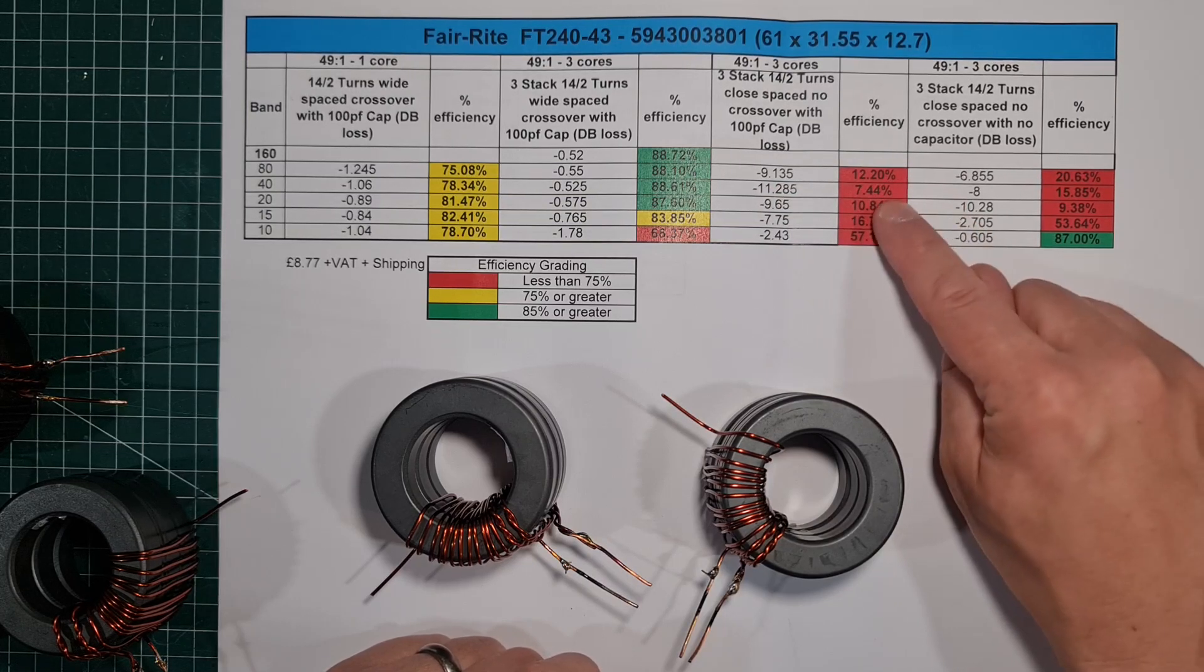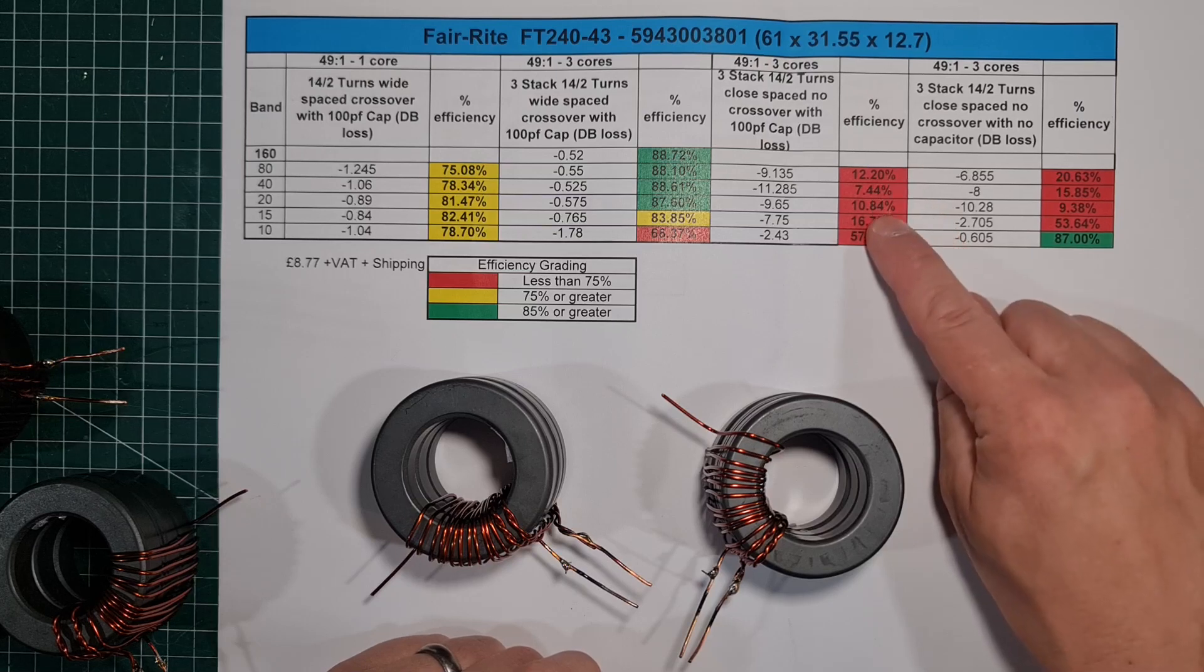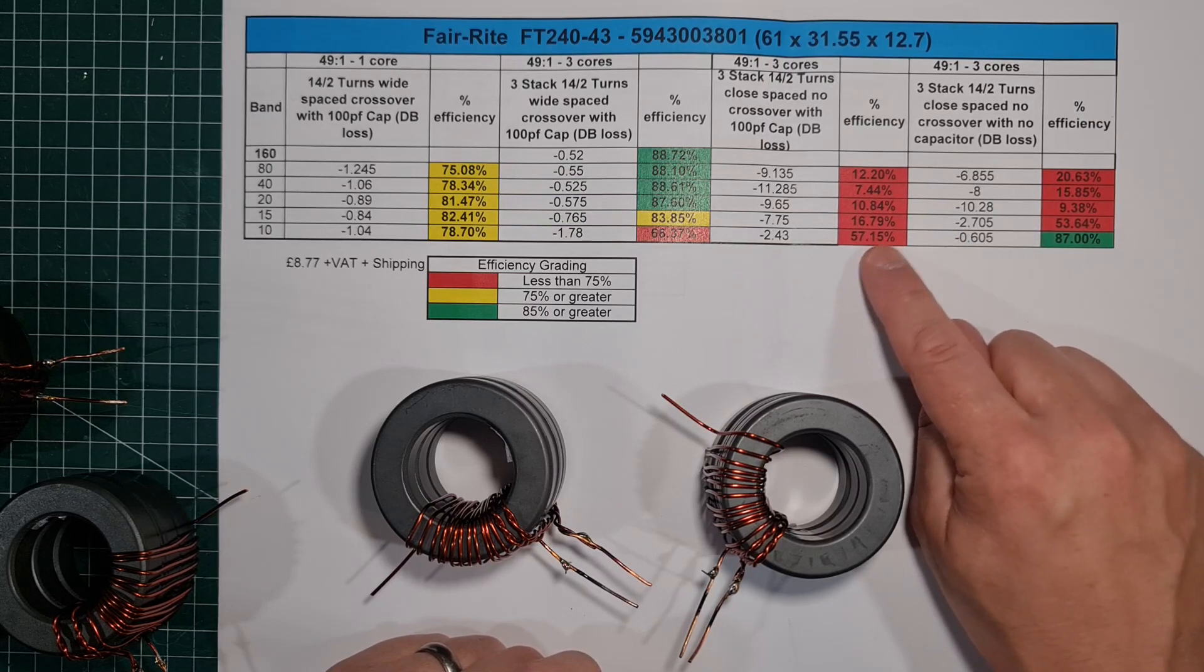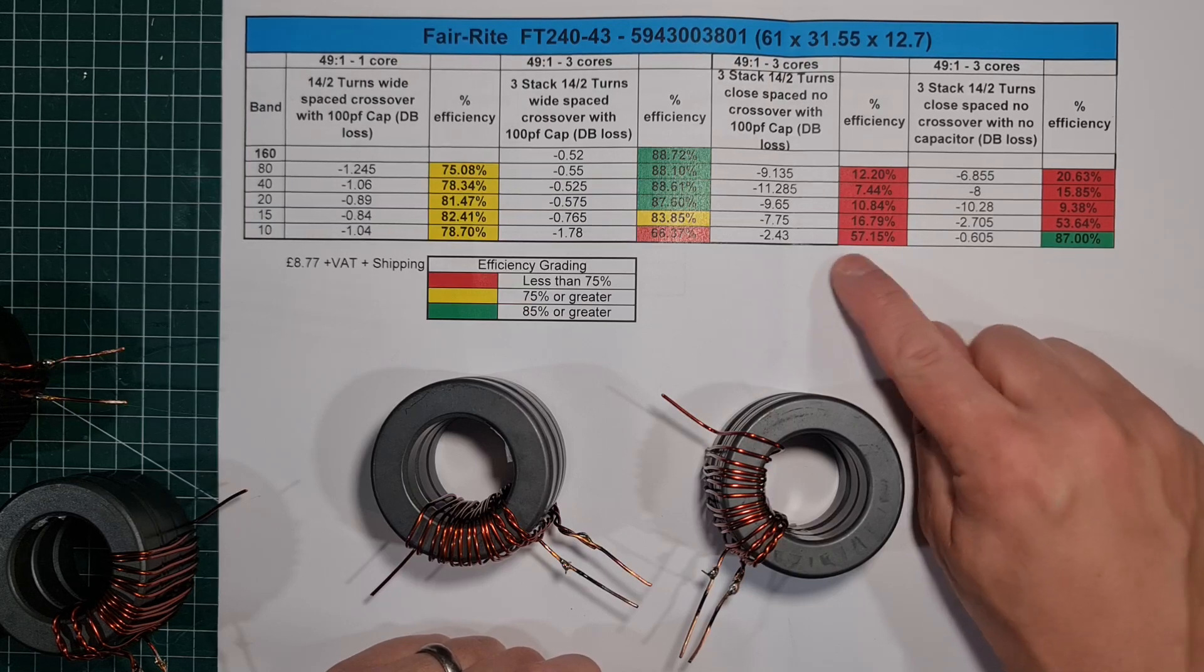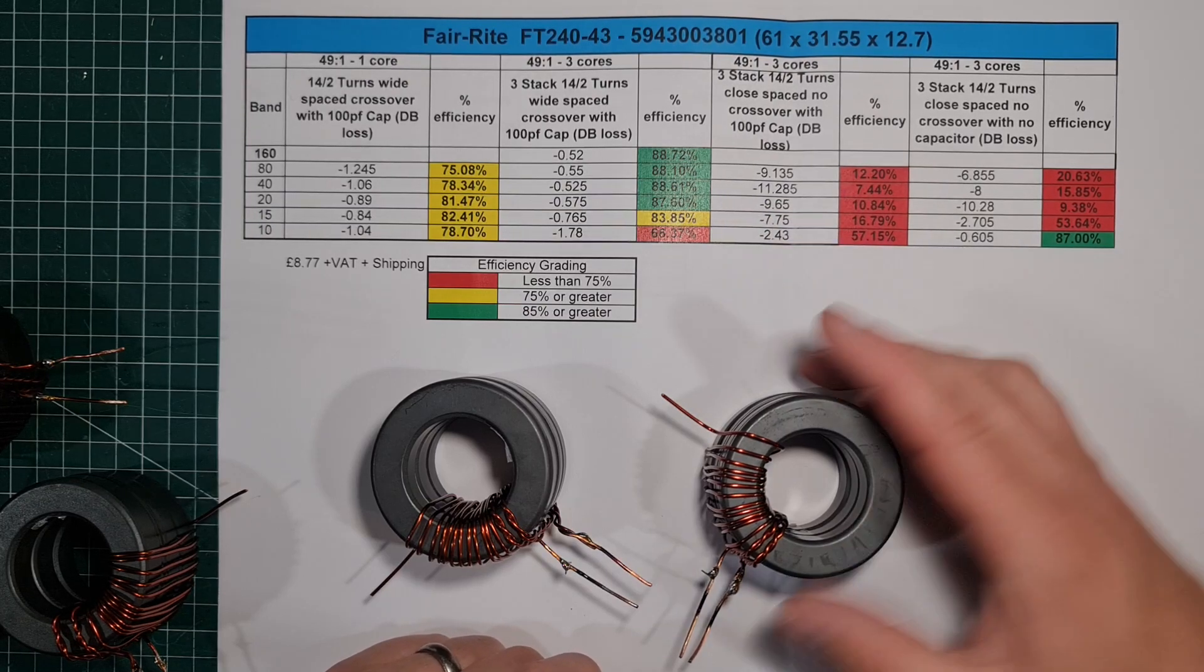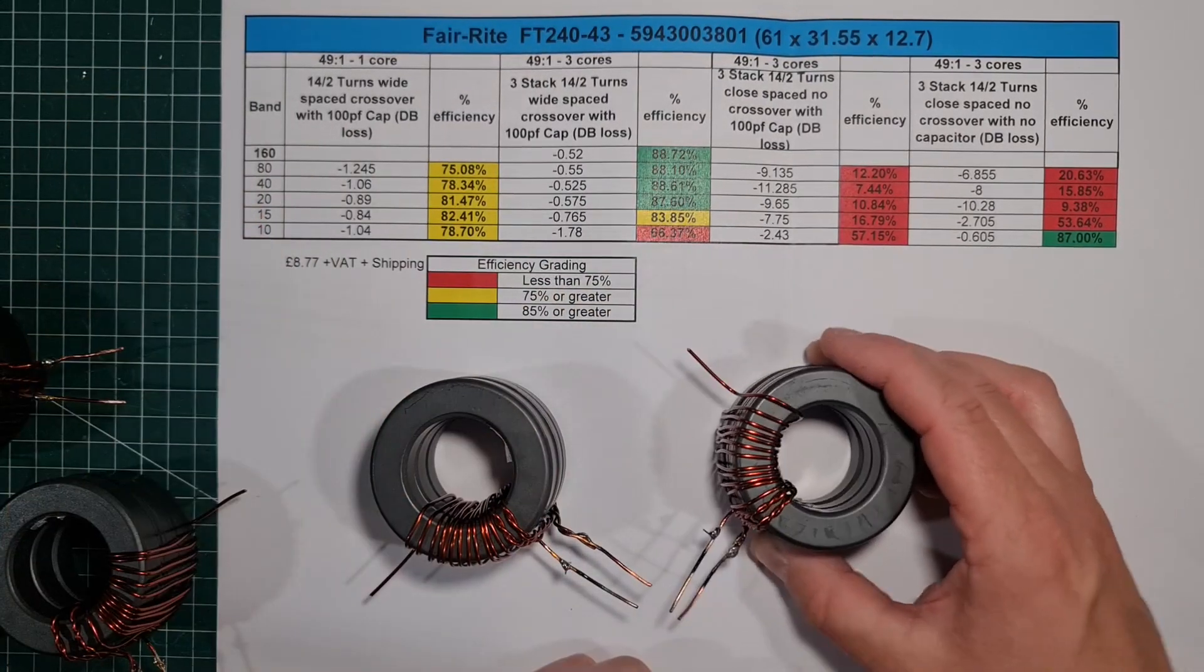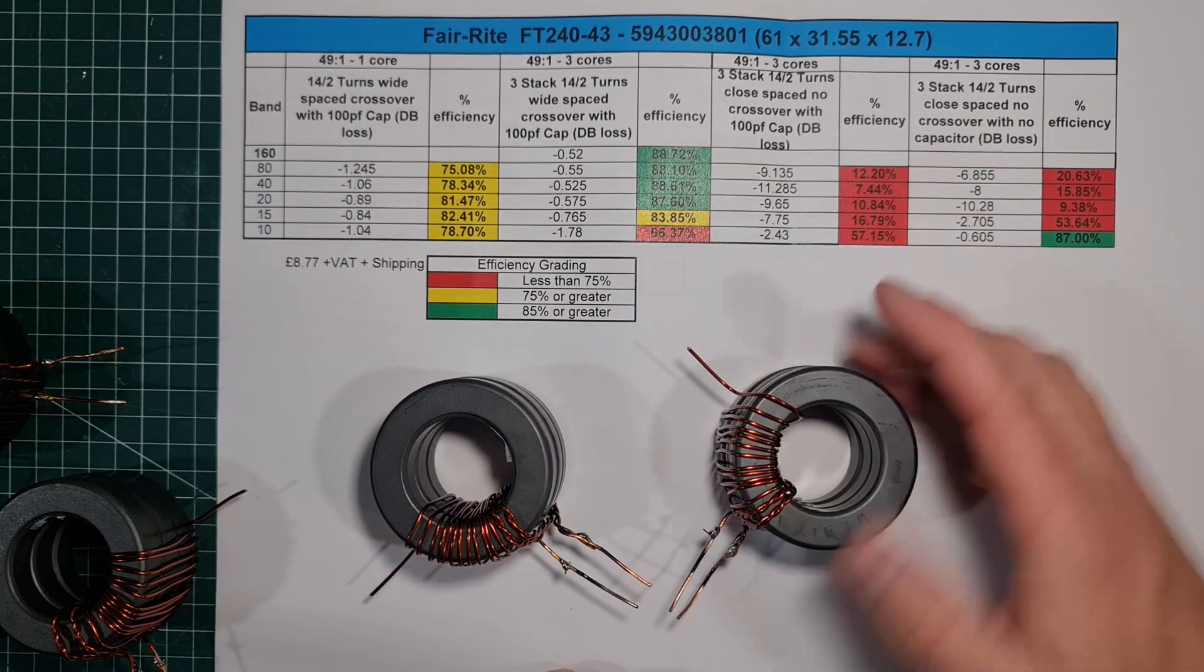You look at your efficiency, your single figures of your efficiency, 12%, 11%, nearly 17%. 10 meters actually gets a good bit better. It was a real funny one, but I don't know whether it's the inductance in here actually affecting that, but real terrible results with this close winding.